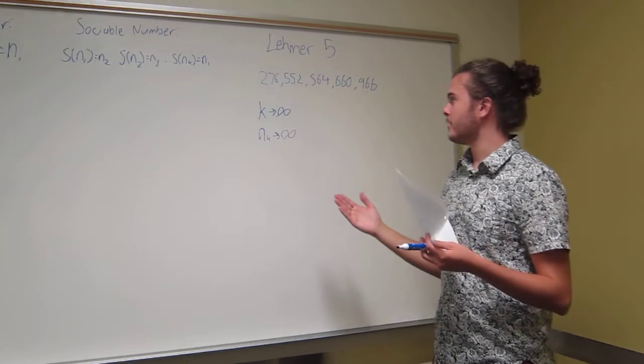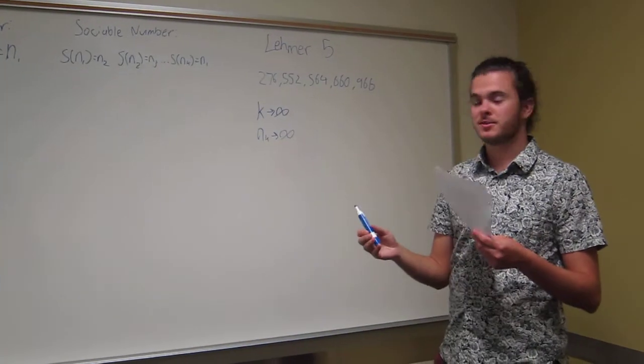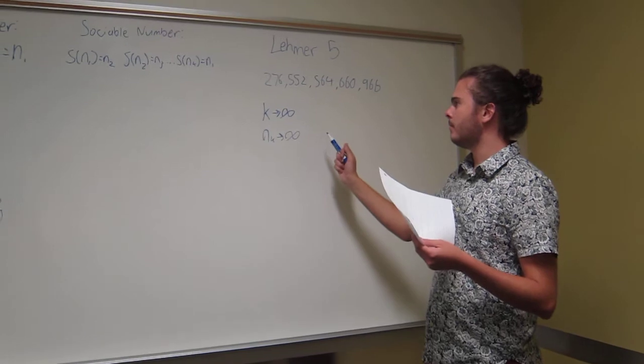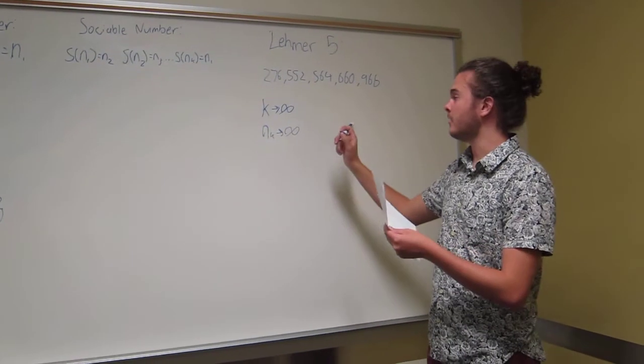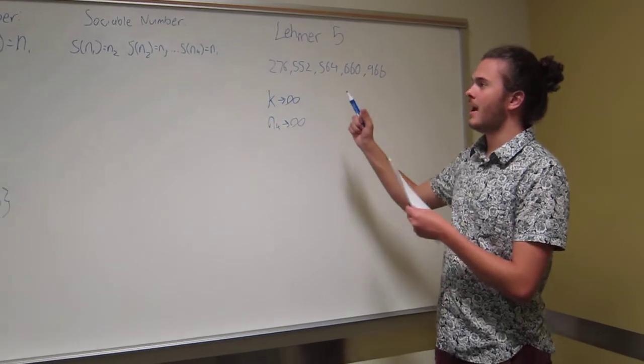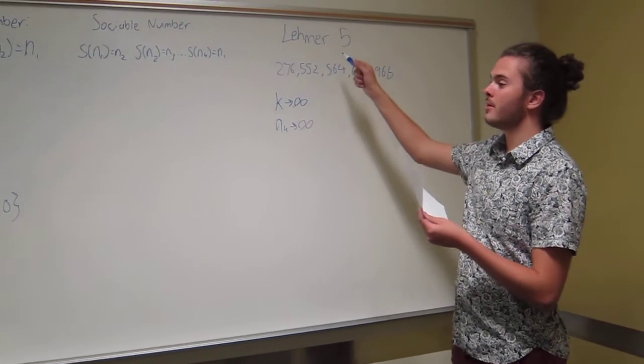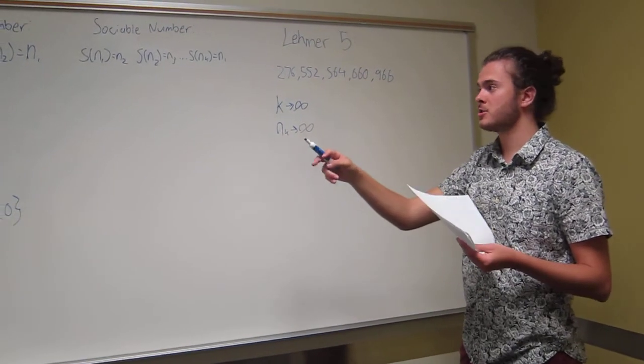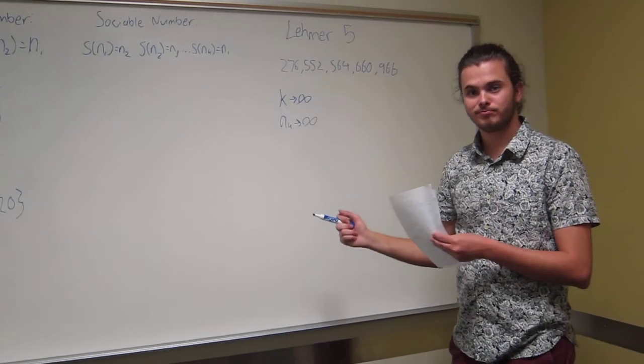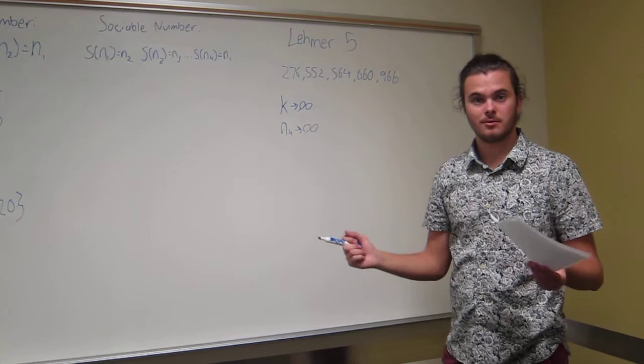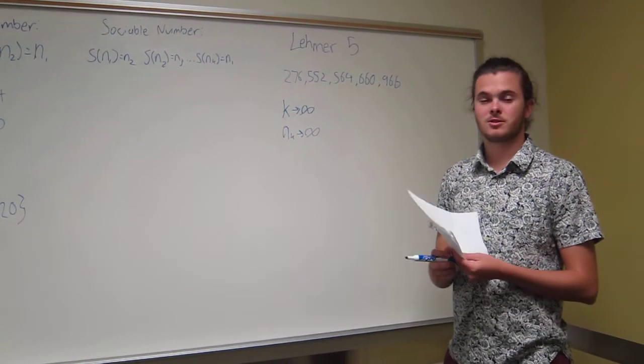And just another note with this, basically, as the terms approach infinity, you know that the next term for the most part also has to approach infinity and increase, which means that a number that would be a counter example to Catalan's conjecture would basically have to be mostly abundant numbers. But like I said before, Catalan's conjecture is still open to this day.